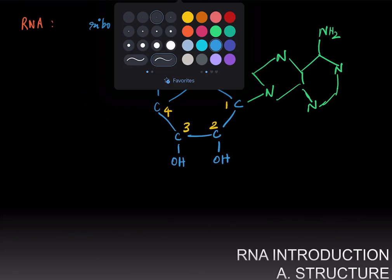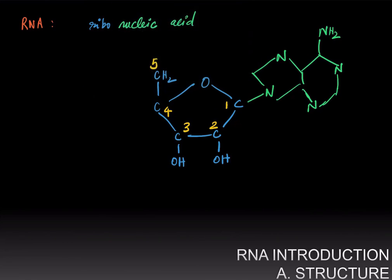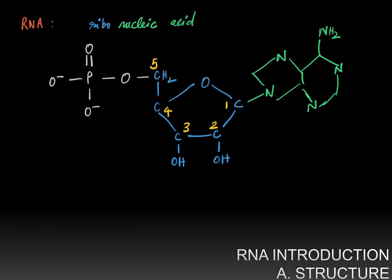And finally, one would have a phosphate group attached to the fifth carbon of the ribose sugar, and this phosphate is negatively charged. Here we have a nucleotide, the basic repeating unit of RNA. The nucleotide is a nucleoside monophosphate, where the nucleoside refers to the ribose sugar with a nitrogenous base attached to it.